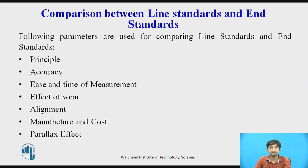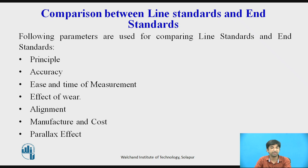Based on Principle: In Line Standard, length is expressed as the distance between two lines. Whereas in End Standard, length is expressed as the distance between two flat parallel faces. Regarding Accuracy: In Line Standard, accuracy is limited to plus or minus 0.2 mm for high accuracy, and scales have to be used in conjunction with a magnifying glass or microscope. In End Standard, it is highly accurate for measurement of close tolerances up to plus or minus 0.001 mm.